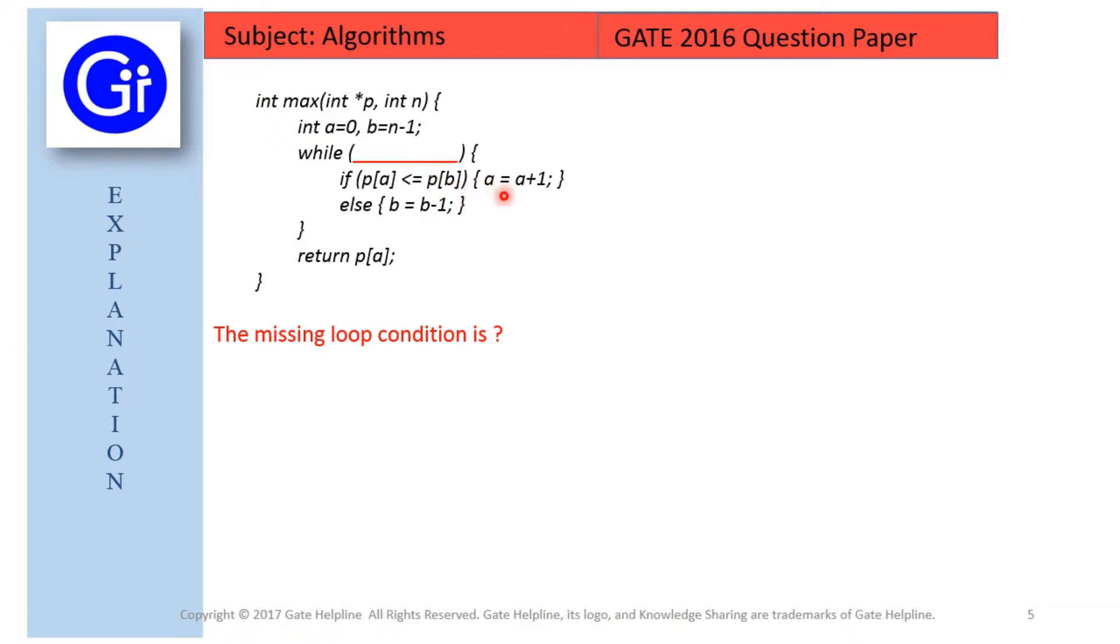After that, if the starting element of the array is smaller, then we increase the value of the index, that is a equals to a plus 1. Else we decrease the value of the last index, that is b equals to b minus 1.